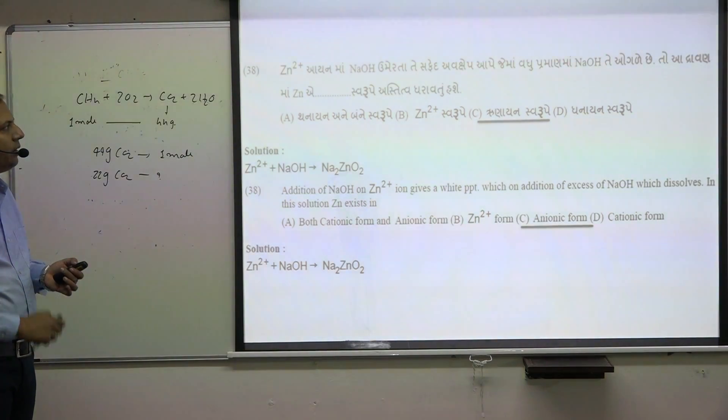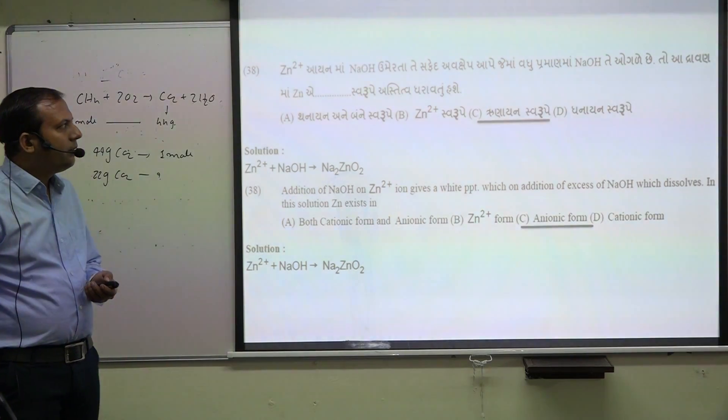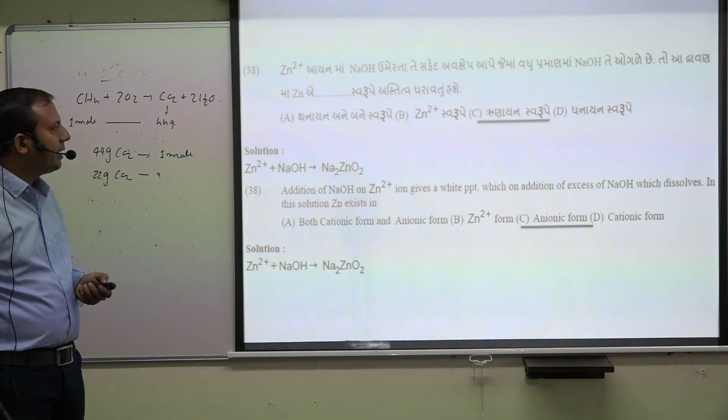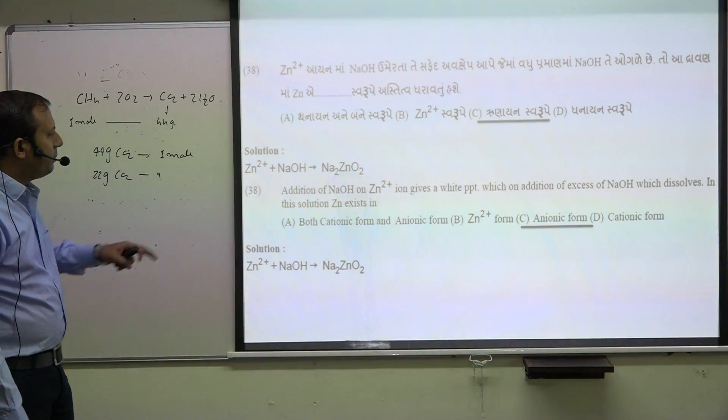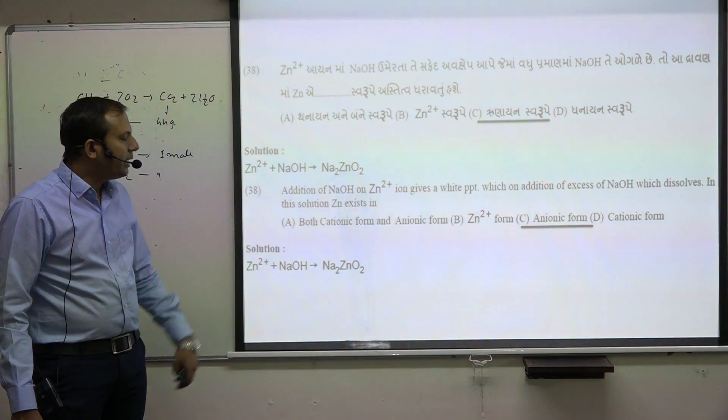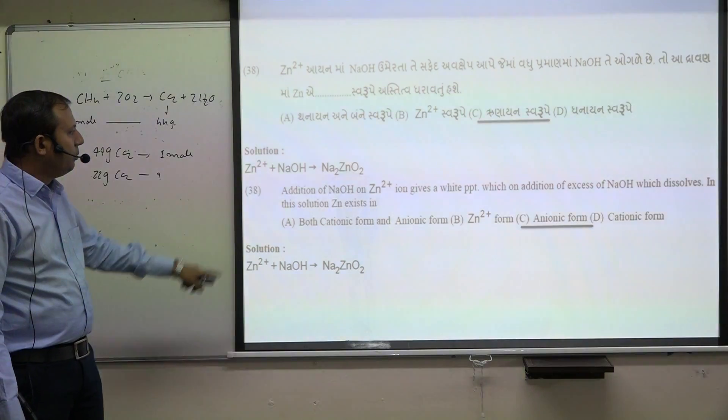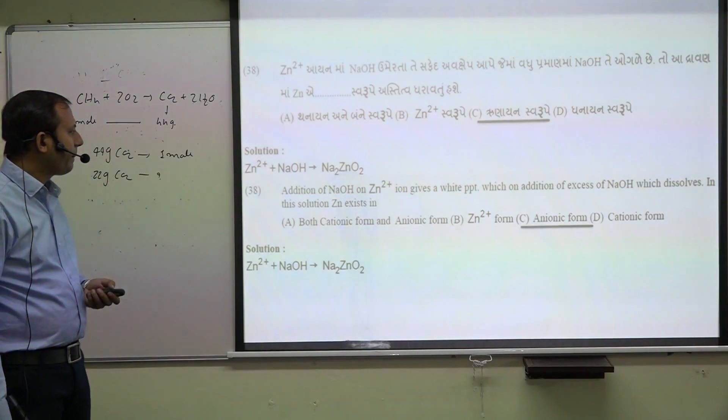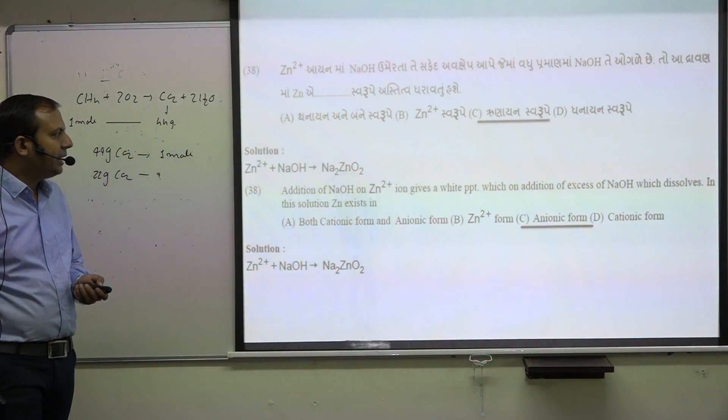Zn plus O2 plus NaOH gives Na2ZnO2. Two moles are used to produce the anionic form.